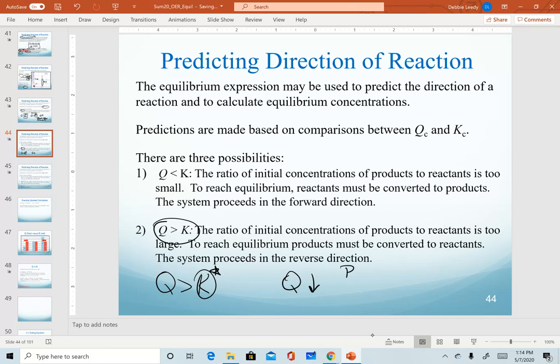And again, if Q is written as products over reactants, the only way for this net ratio to decrease is for products to decrease at the same time that reactants are increasing.